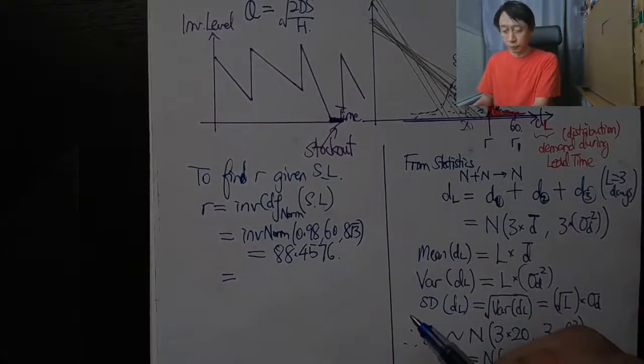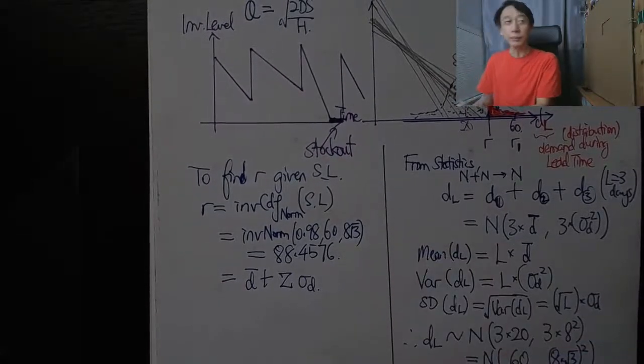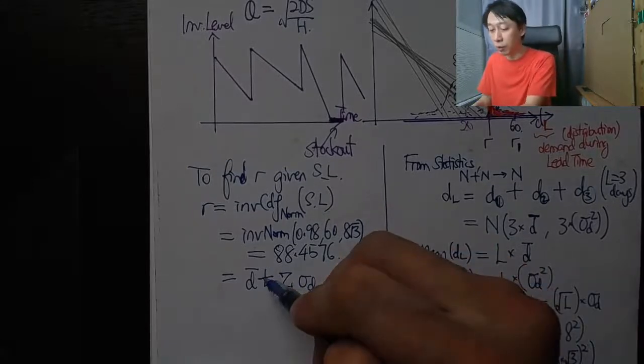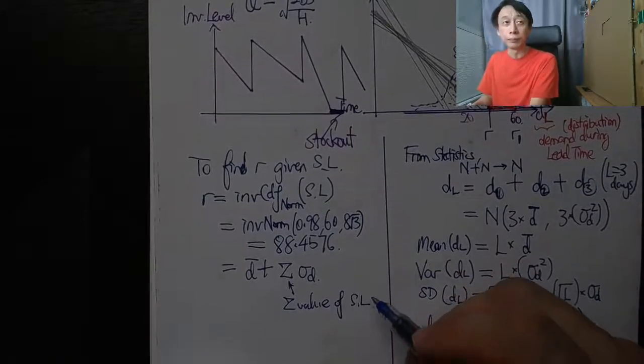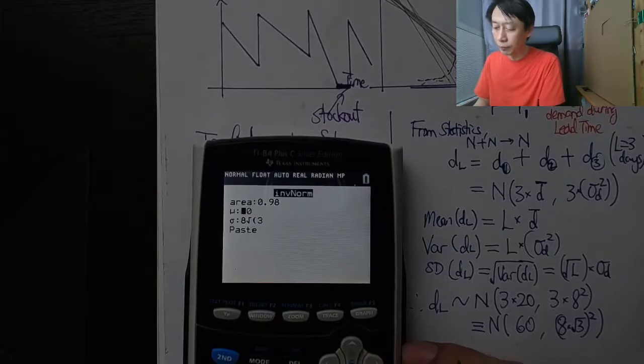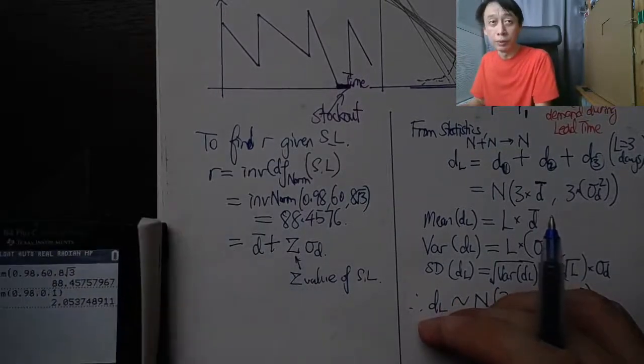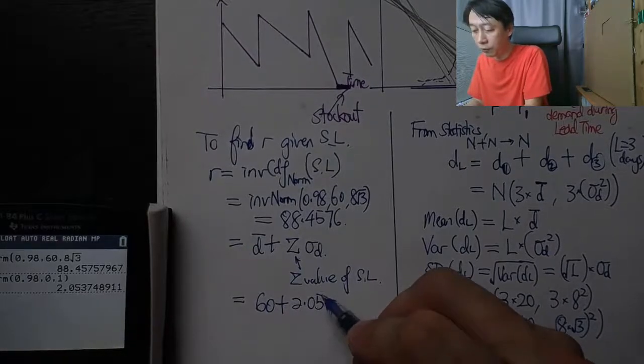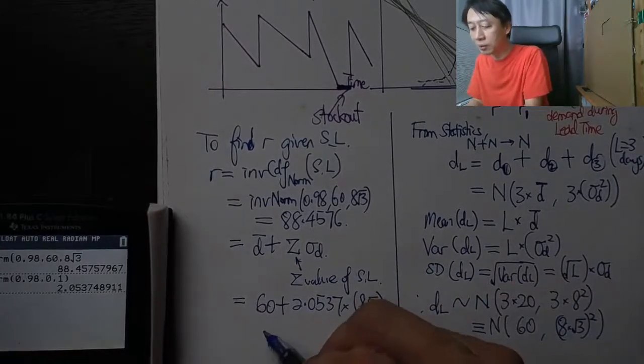Now we can also write, we can also write the z value if you have the z value. From table lookup we can always find the z value of service level. So we can look up our table here by entering 0 and 1, the standard normal. We get our z value to be 2.0537. So that's going to be 60 plus 2.0537 times 8 square root 3, and we should get back the same answer because the TI calculator does it for us already.